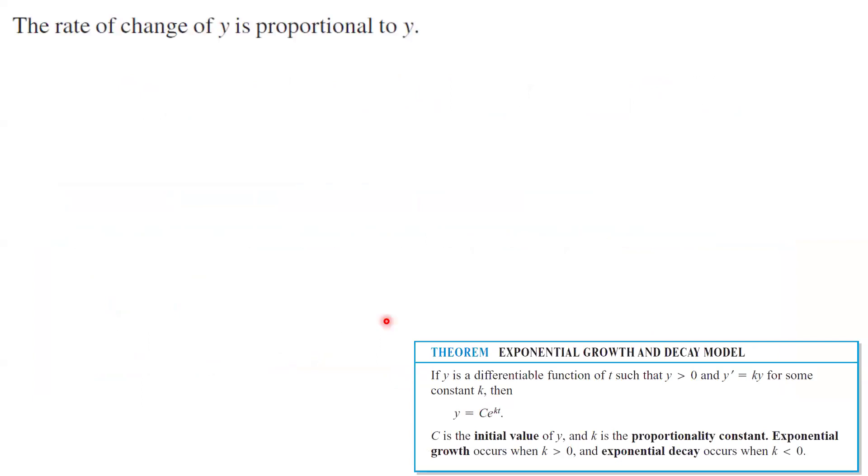In this example, the rate of change of y is proportional to y. When t equals 0, your y value is 2. And when t equals 2, y becomes 4. So what is the value of y when t equals 3?